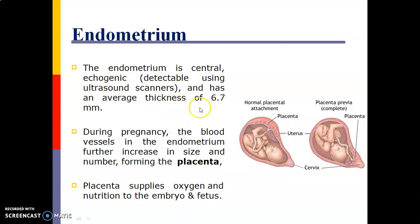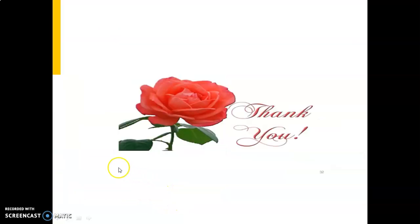The endometrium is centrally echogenic and has an average thickness of 6.7 mm. During pregnancy, the blood vessels in the endometrium further increase in size and number, forming the placenta. The placenta supplies oxygen and nutrition to the embryo and fetus. Thank you. From this experiment we understand the major components of the female reproductive system, their location, structure, and function.